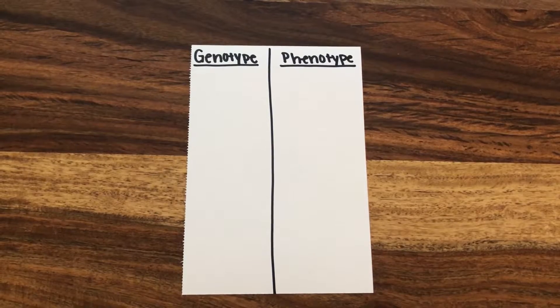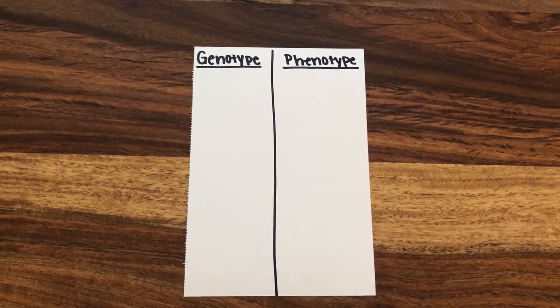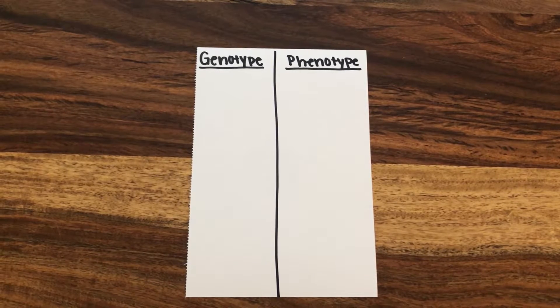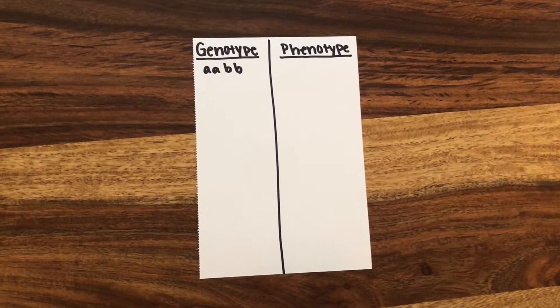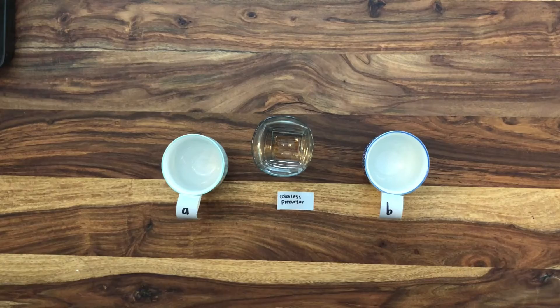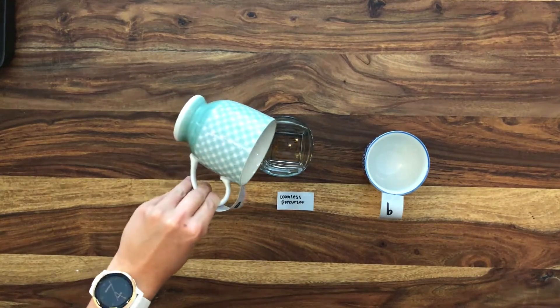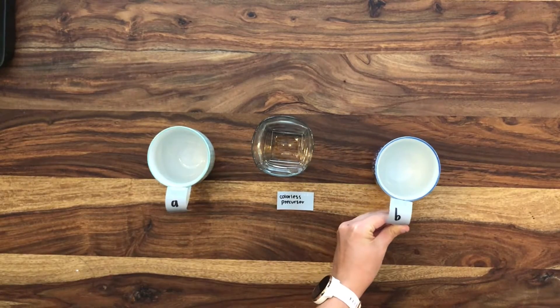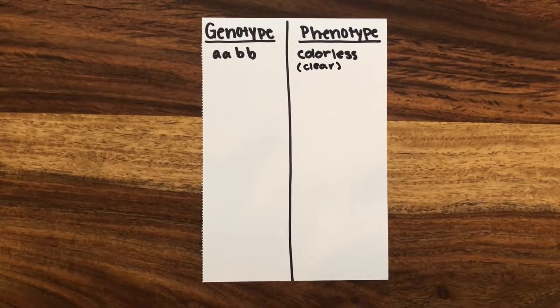To demonstrate duplicate dominant epistasis, we will explore what happens when different combinations of alleles are present in the genotype of this species of glassware. Let's start with homozygous recessive at both loci. This means the genotype is little a, little a, little b, little b. Neither recessive allele A nor recessive allele B produce any polypeptides that result in a color change in the colorless precursor, so no change will occur.